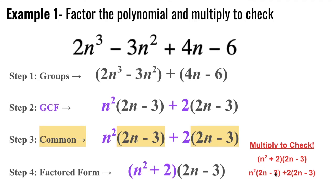n squared times 3 is 3n squared, 2 times 2n is 4n, and 2 times 3 is 6. So I do end up with the polynomial that I originally started with. So all in all, this is called factor by grouping.